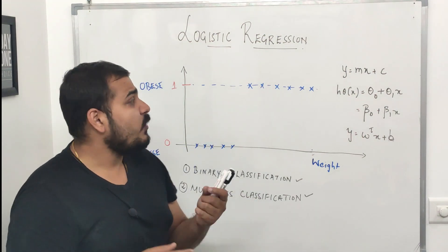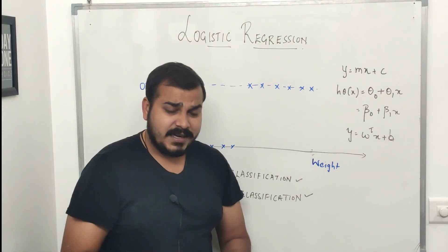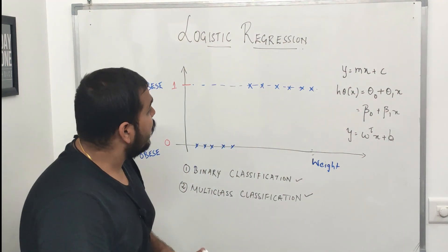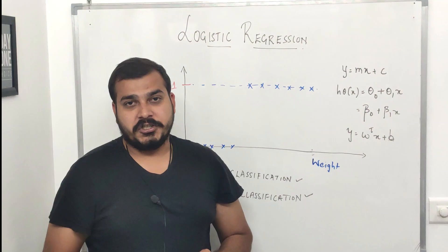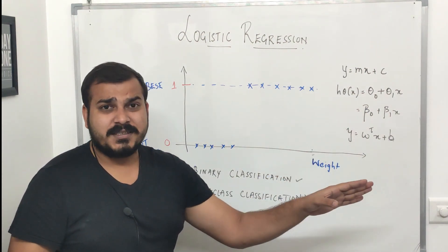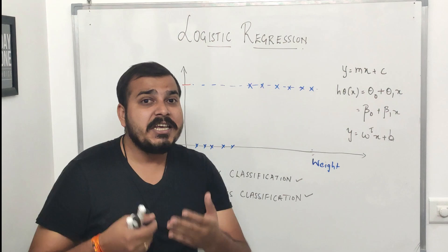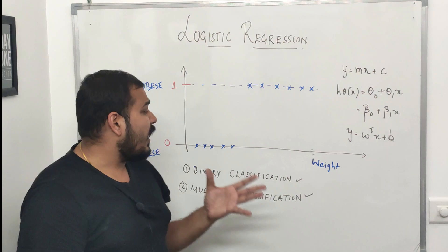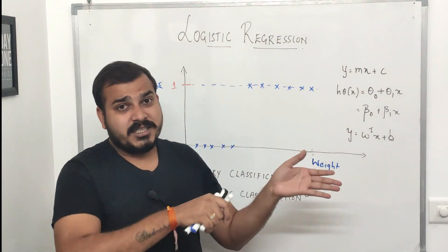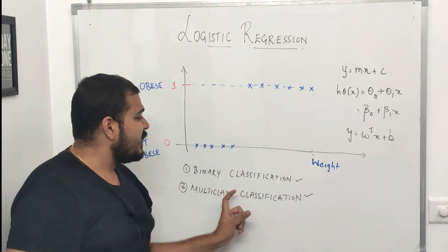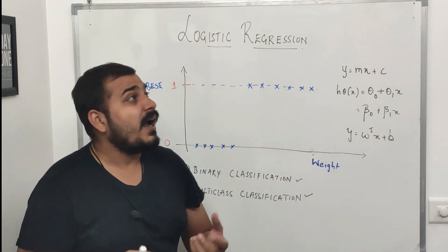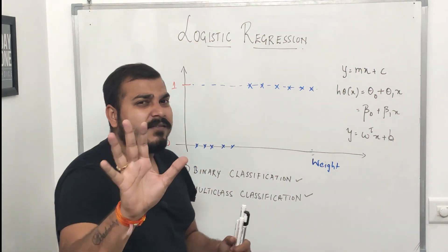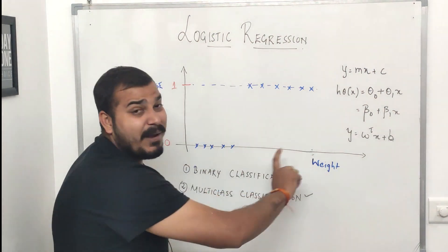Let's understand how logistic regression actually works. First, why is this algorithm used? Logistic regression is used for binary classification. In tutorial 31 I covered linear regression and metrics like R-squared. That was a regression problem, but logistic regression is a binary classification problem. So the important question is: why is it called regression?